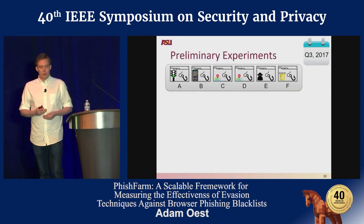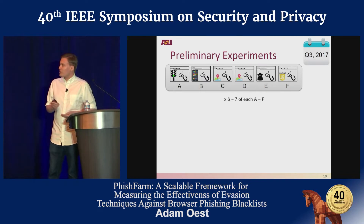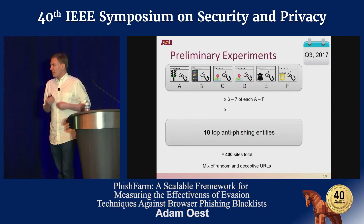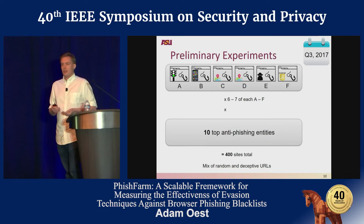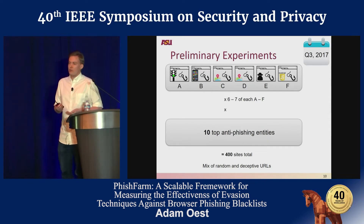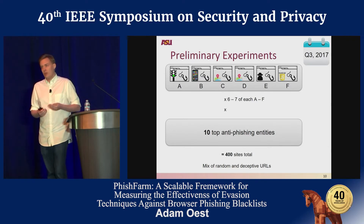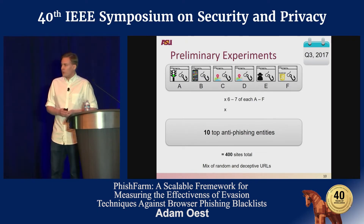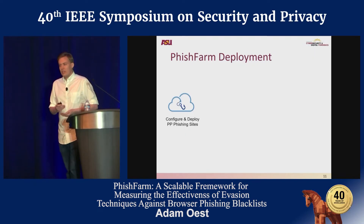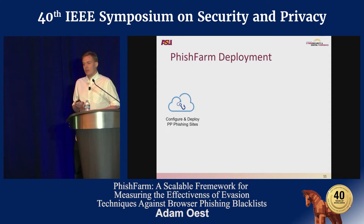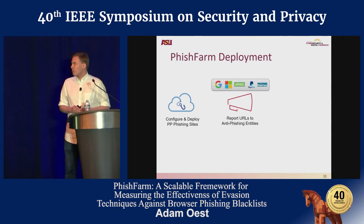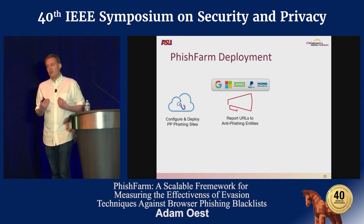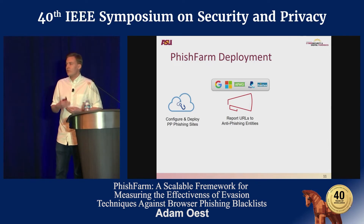For our preliminary experiments, we took these six cloaking techniques and created batches of websites with six or seven of each. We then took each batch and reported it to ten top anti-phishing entities for a total of 400 sites. We used both random and deceptive URLs to understand if the URL plays an important factor alongside the entity and the cloaking technique. We started by configuring and deploying the websites in cloud infrastructure using Fish Farm, then reported each batch to the anti-phishing entities directly — one batch of sites going to Google, one batch going to Microsoft, and so on.